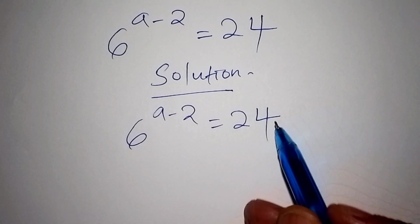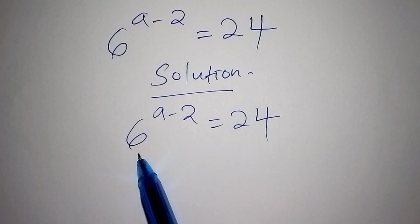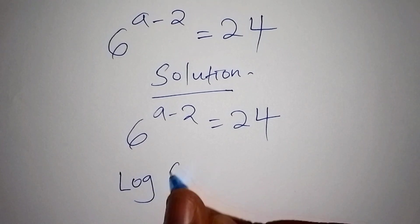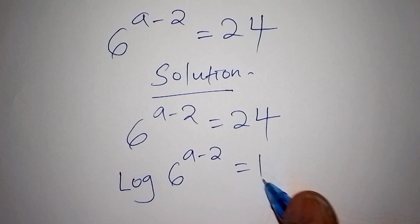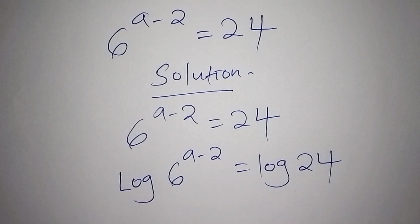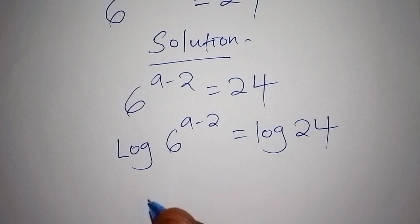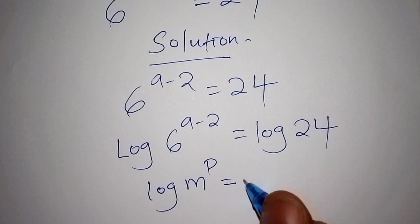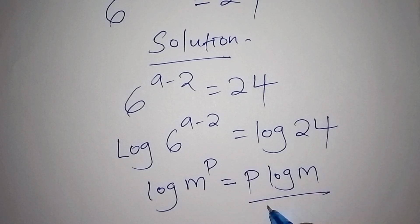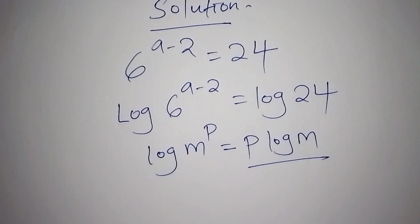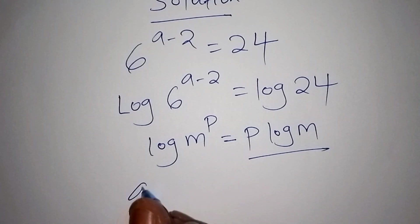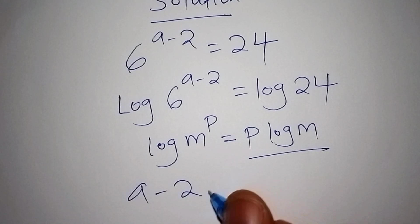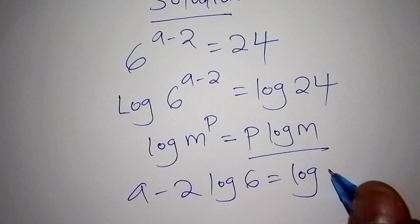In this case it is difficult for us to express 24 to the base of 6. So we need to introduce the log of both sides. We shall have the log of 6 to the power of a minus 2 is equals to the log of 24. Now the log of 6 to the power of a minus 2 — using the rule that log of m to the power of p equals p·log m — we express this as a minus 2 times log 6 equals log 24.